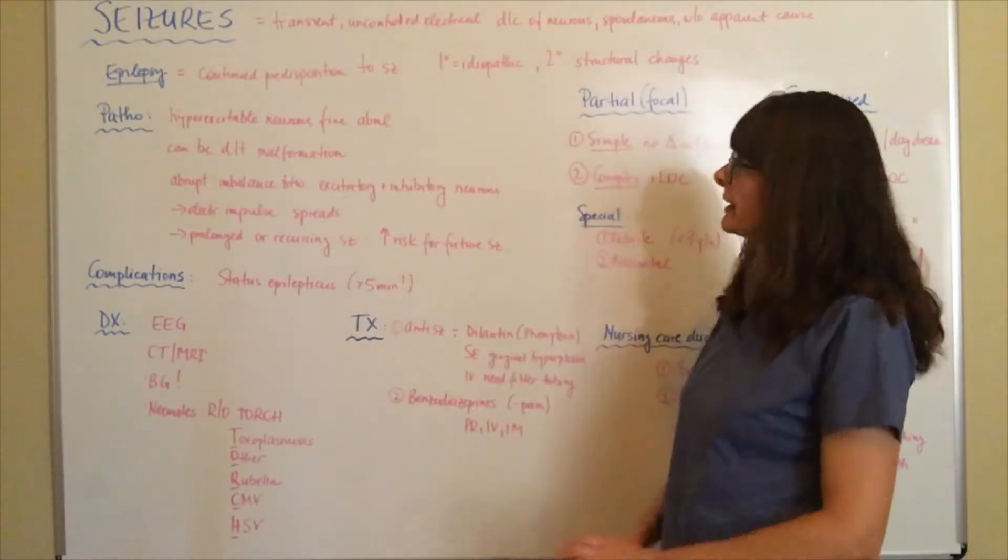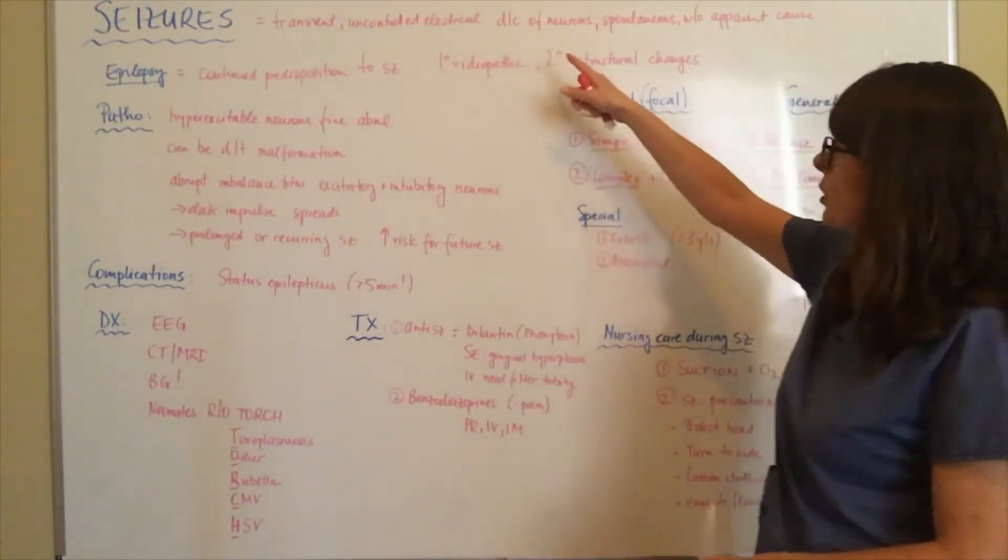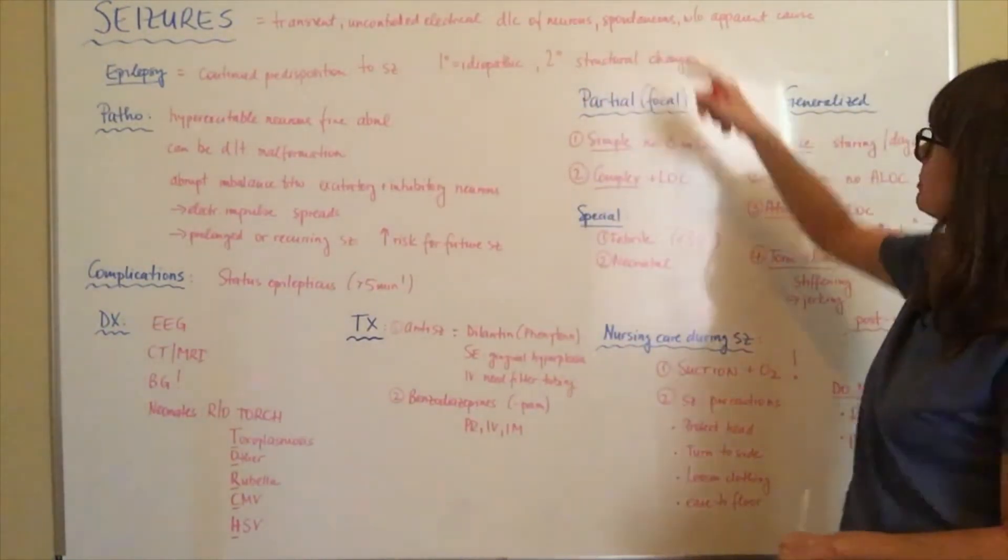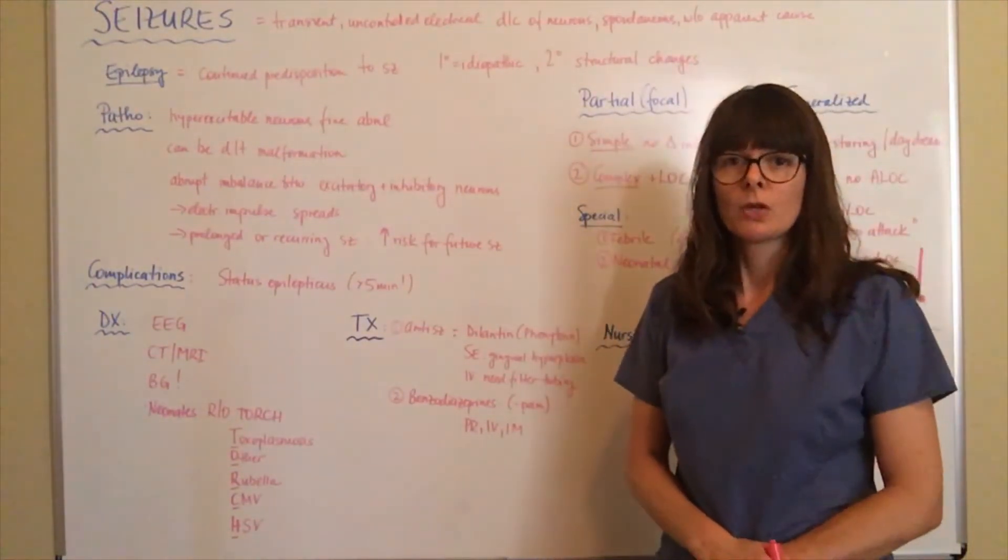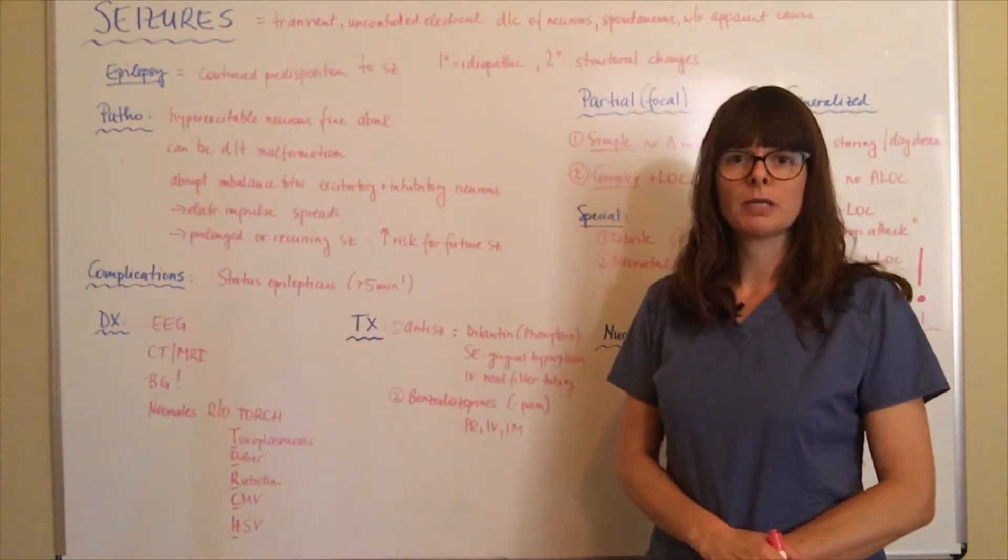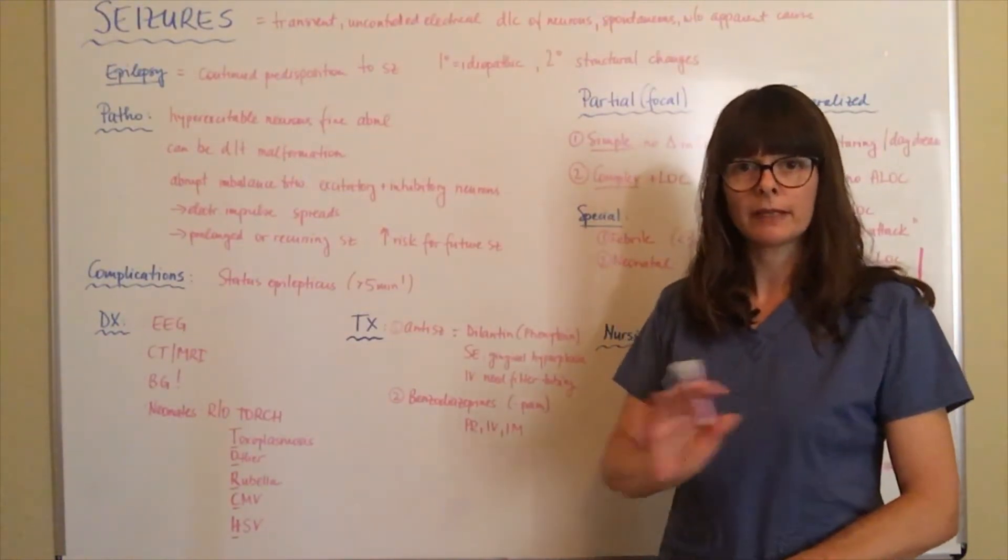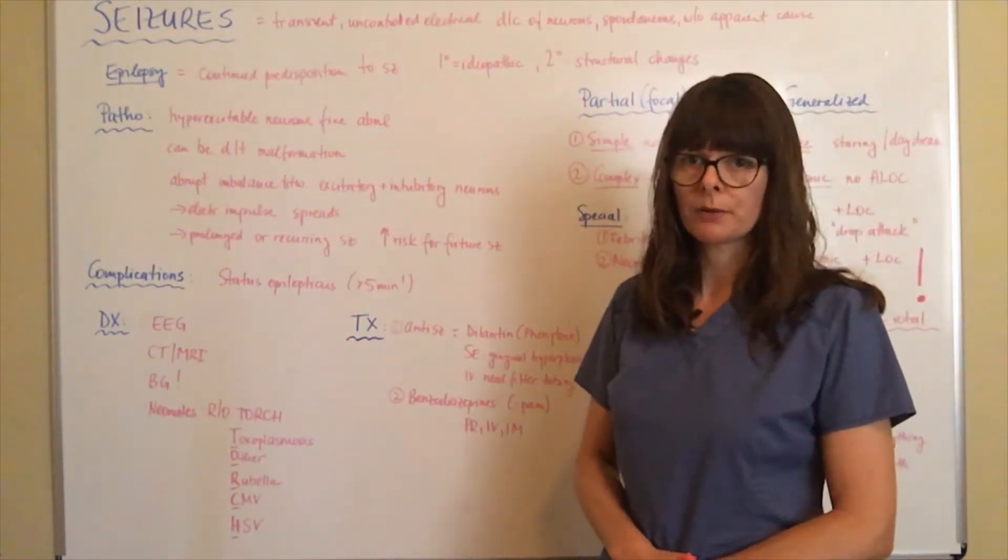Seizures are defined as a transient, uncontrolled electrical discharge of neurons that can be spontaneous and without apparent cause. There's something going on in the brain that causes the brain cells to be extra excitable and then that impulse spreads around to other brain cells.